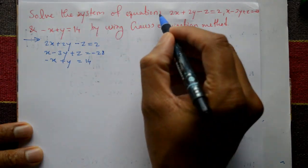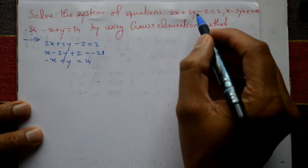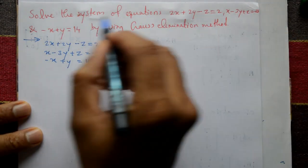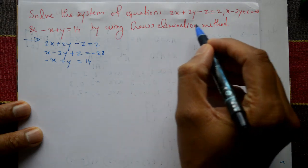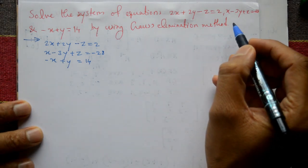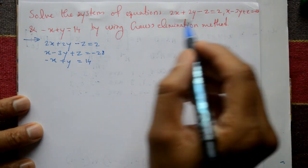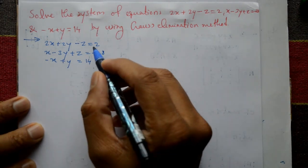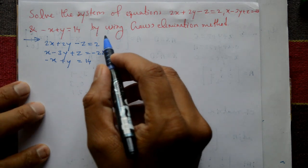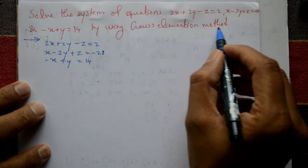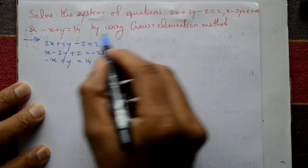The system of equations — three equations are given. We will find the values of x, y, z using Gauss elimination method.